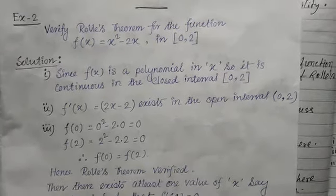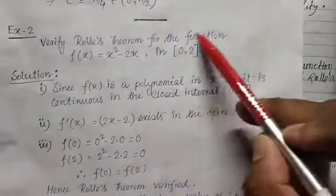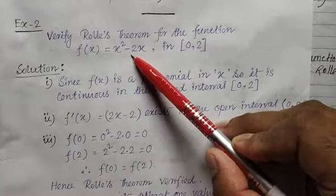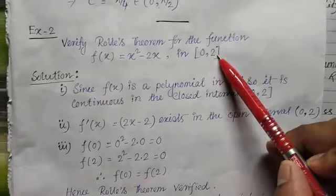Let me discuss the second sum. See the sum, same question. Verify Rolle's theorem for the function f(x) = x² - 2x. The interval is given 0 to 2 closed interval.